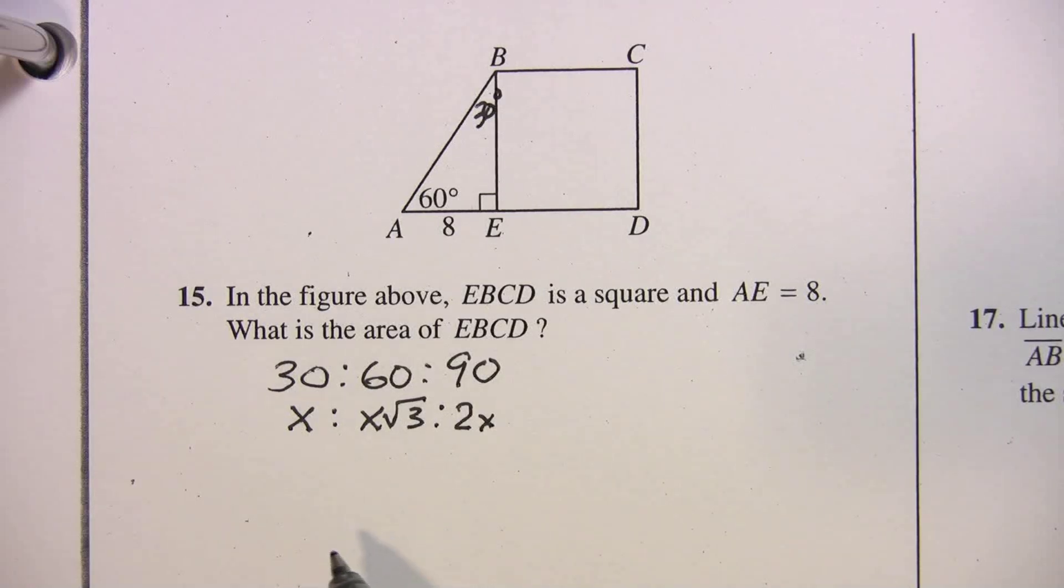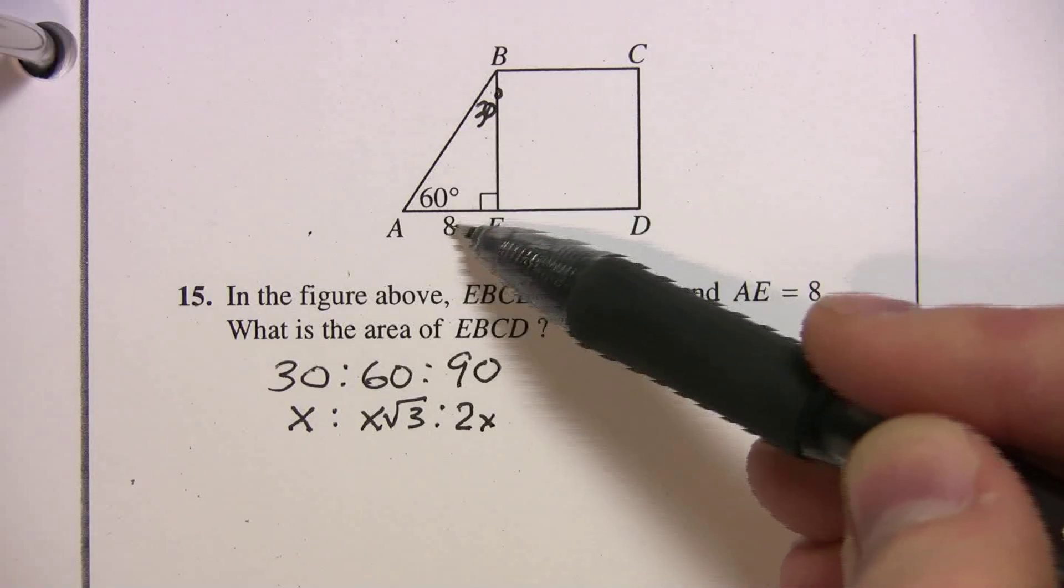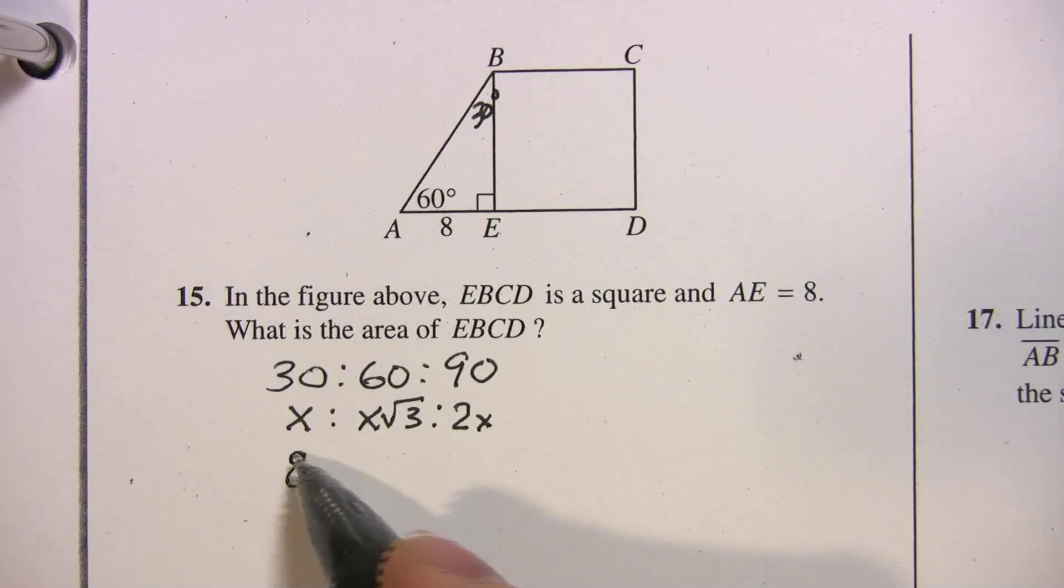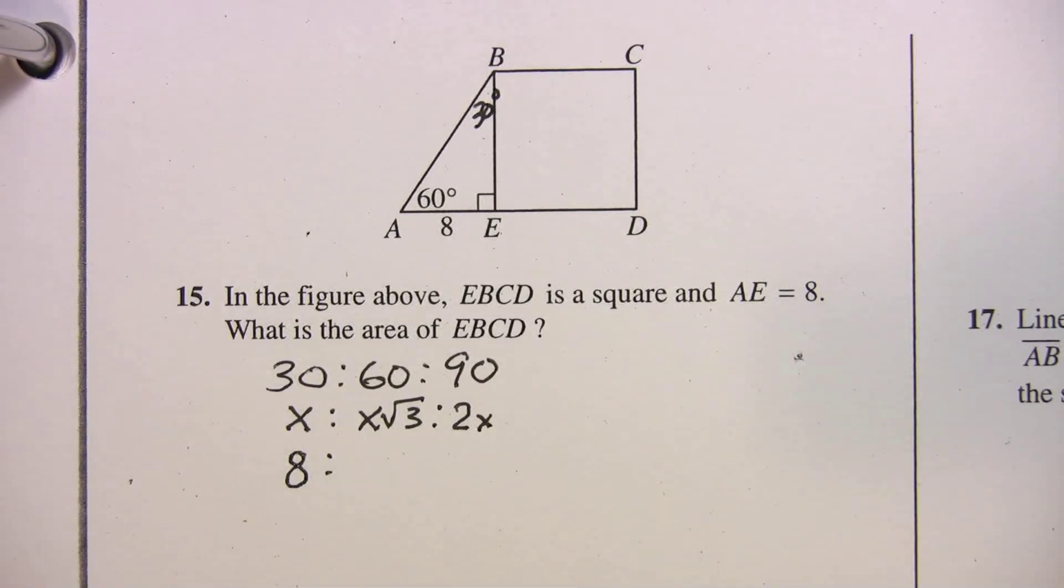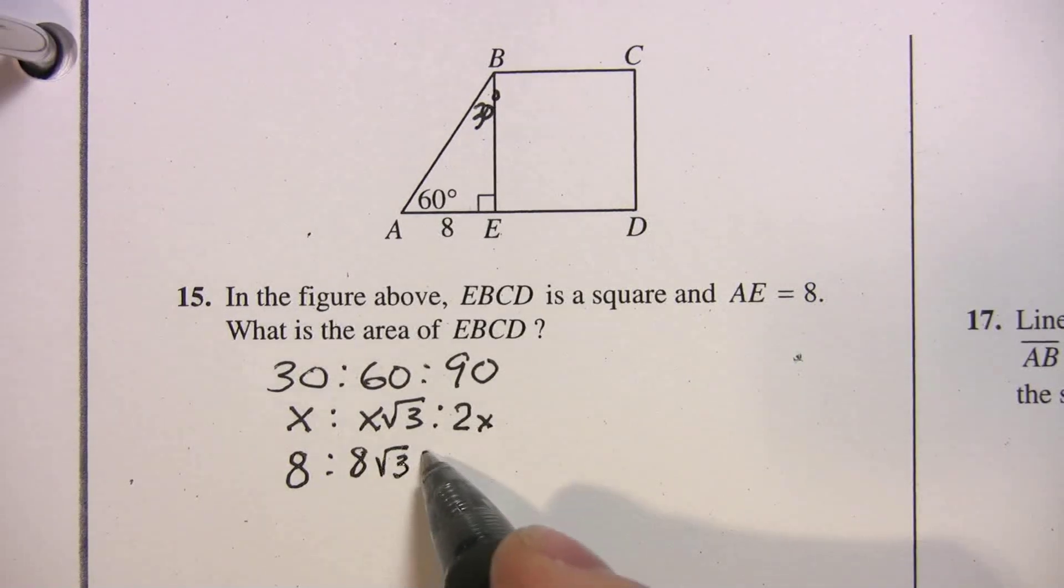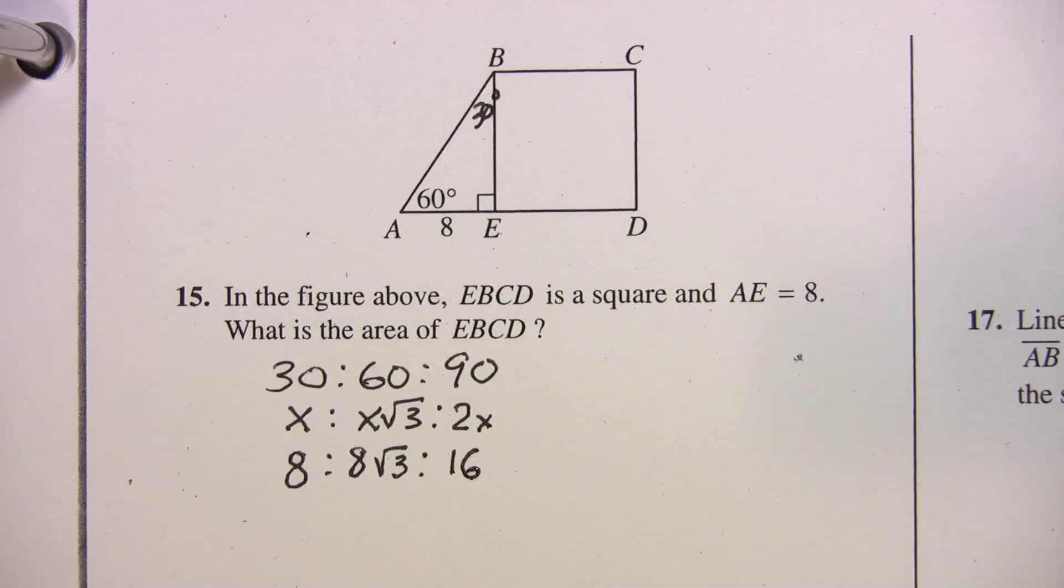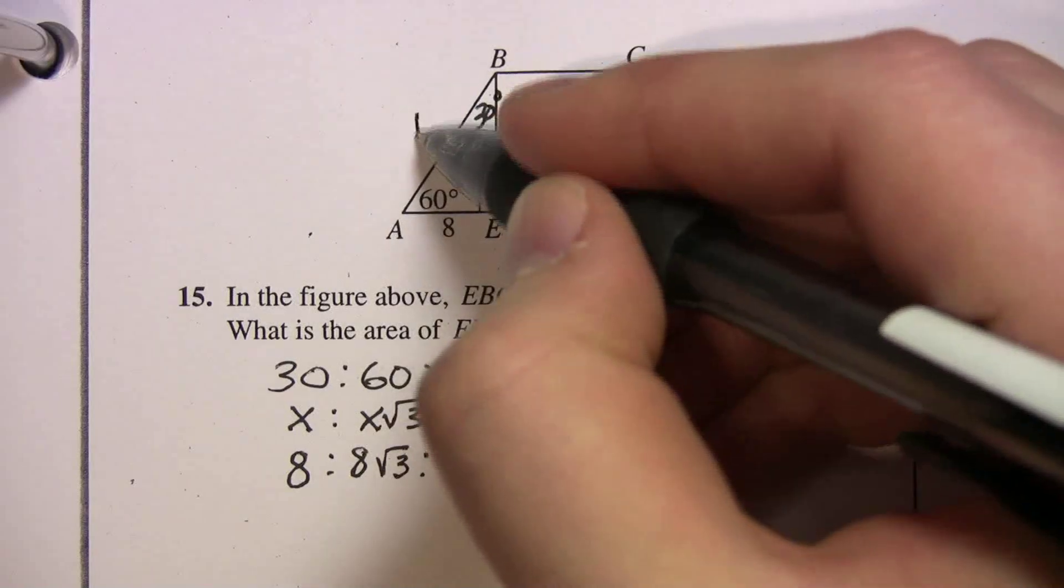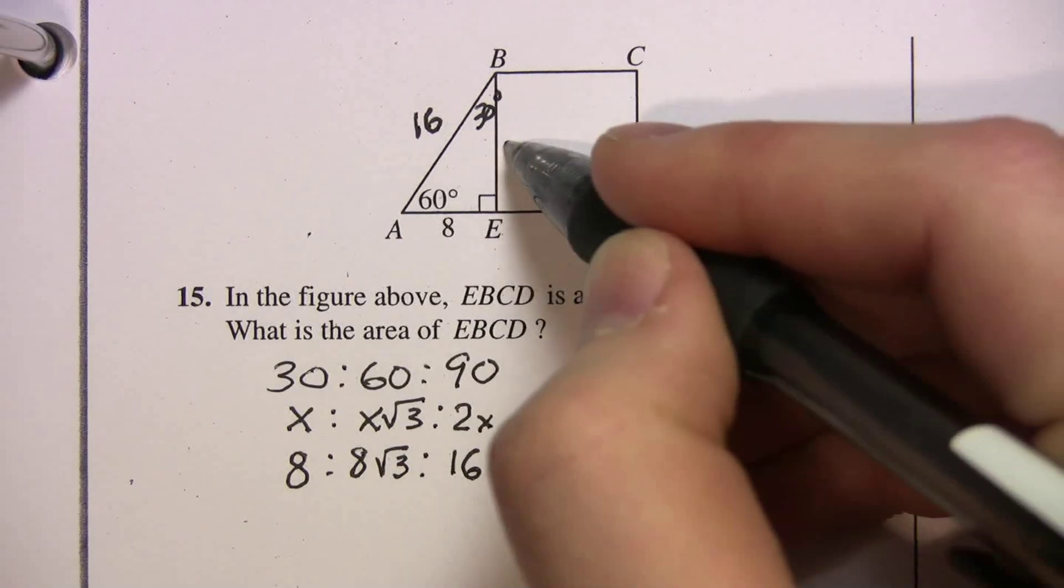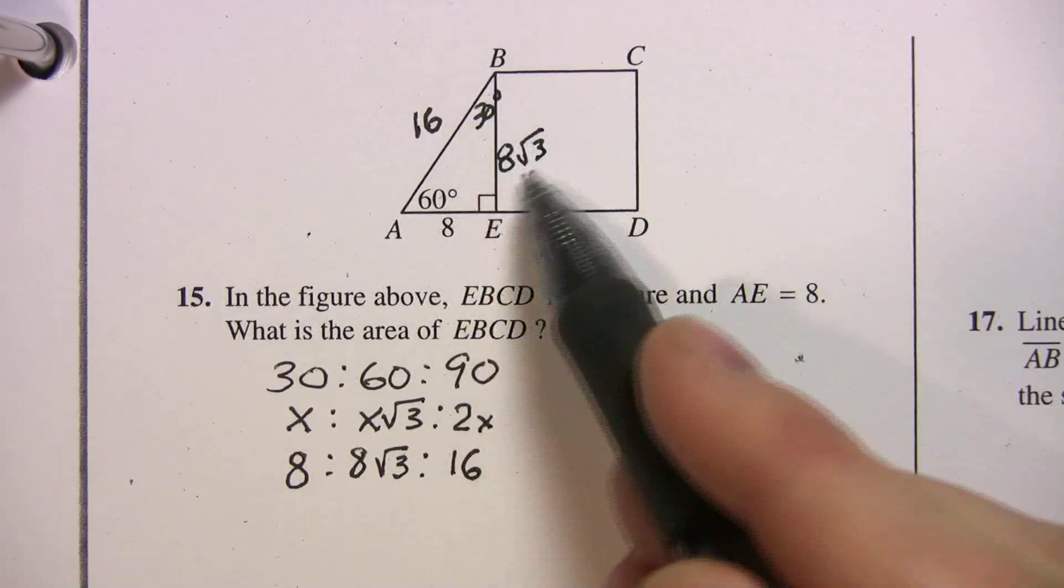So all we're going to do is plug in the values. We know that opposite 30 degrees is the length 8. So we go back to here, opposite 30. So that means x equals 8. Well, if x equals 8, opposite 60 degrees is 8 radical 3. And opposite 90 degrees is 2 times 8, or 16. So we can fill those in. Opposite the 90 is 16. Opposite the 60, 8 radical 3. So we know that side is 8 radical 3.